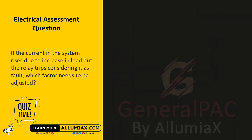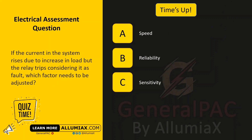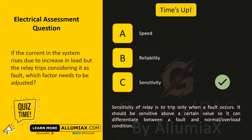If the current in the system rises due to increase in load and the relay trips considering it as a fault, which factor needs to be adjusted? A: speed, B: reliability, C: sensitivity. The answer is C — sensitivity. Sensitivity of a relay is to trip only when a fault occurs; it should be sensitive above a certain value so it can differentiate between a fault and a normal overload condition.